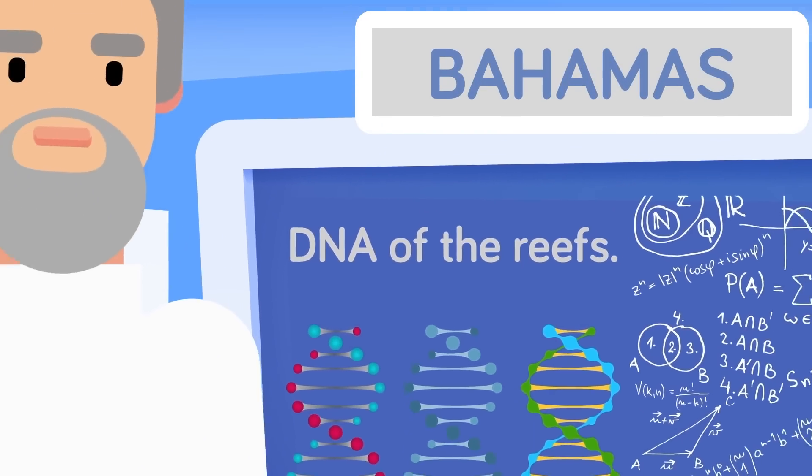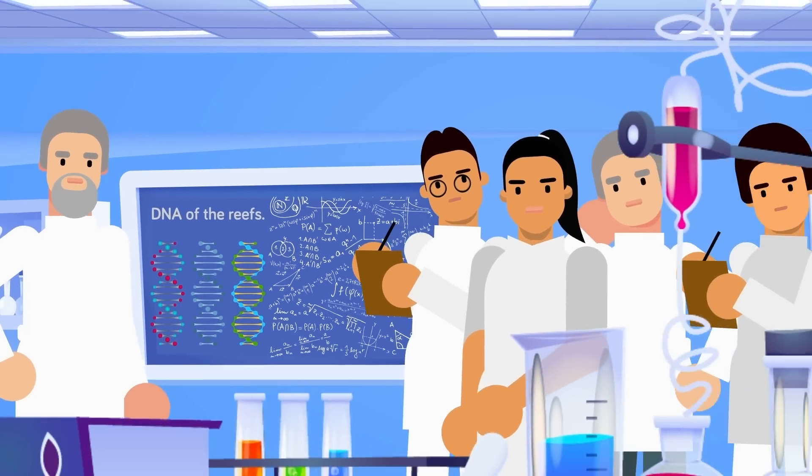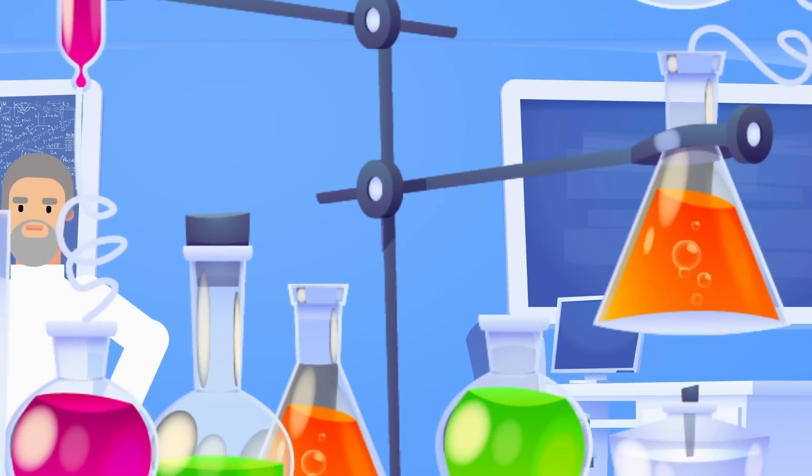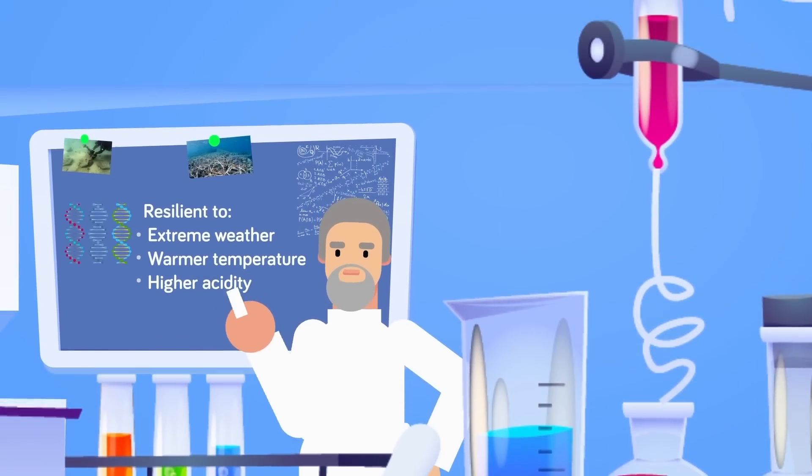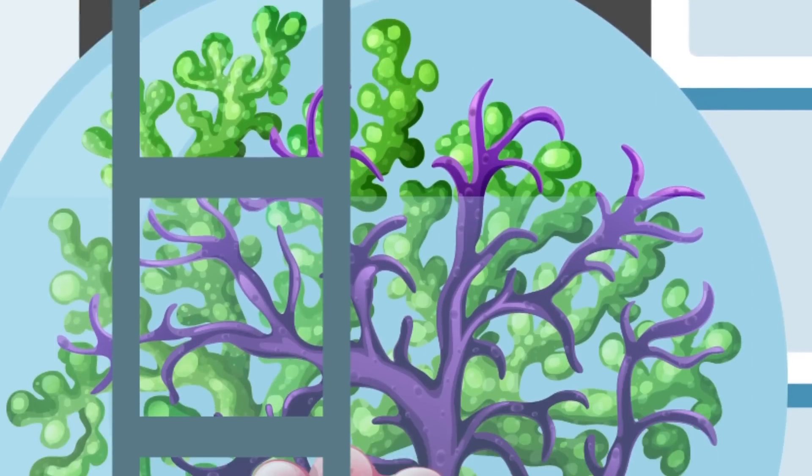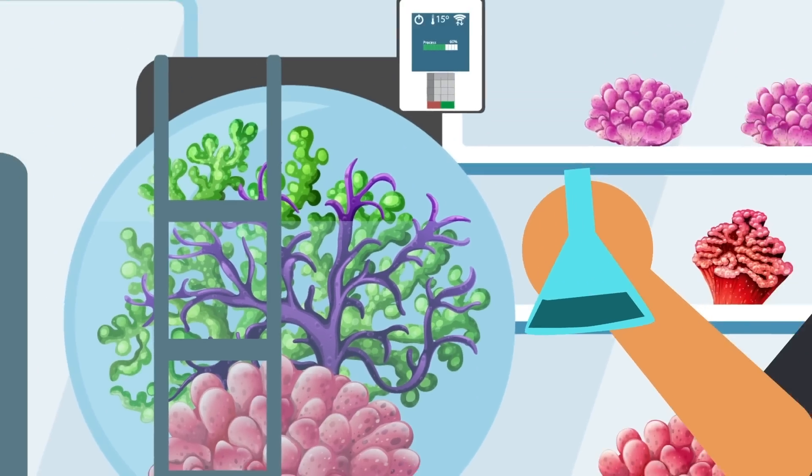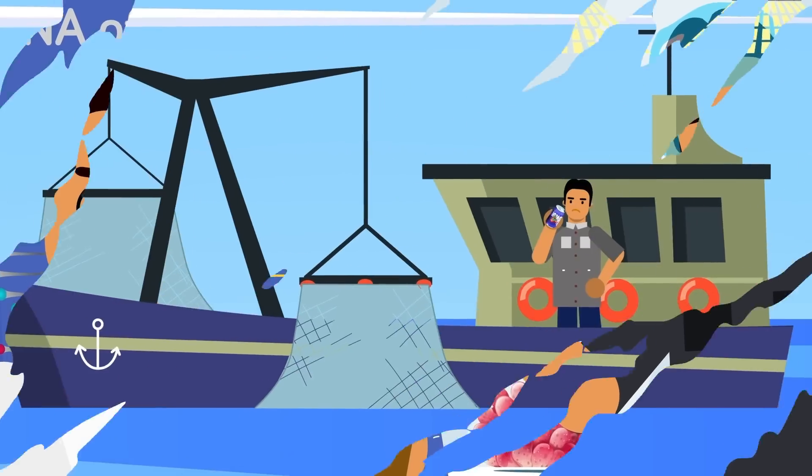On the other side of the world in the Bahamas, scientists are taking a different approach. Rather than introducing artificial support systems, they are targeting the genetics of coral. The scientists identify coral colonies that are the most resilient due to extreme weather, warmer temperatures, and higher ocean acidity, and breed them to produce stronger corals. This is similar to how farmers modified the crops we eat today. In this circumstance though, scientists are trying to maintain biodiversity while also giving the coral the best shot of survival.